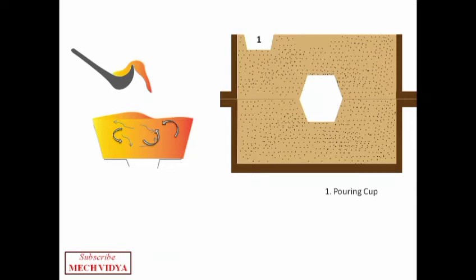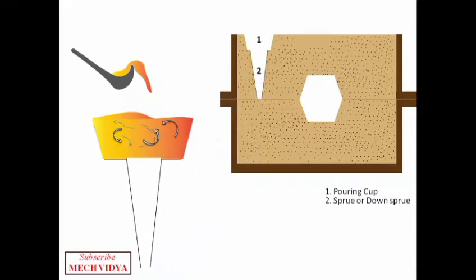Now connected to the cup is a tapered section called the sprue. The molten metal flows from the cup to the sprue. But wait, here you can see that the sprue is tapered. The question is, why is the sprue tapered? Is there any special reason behind this?